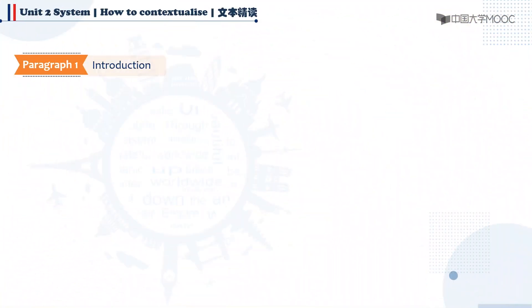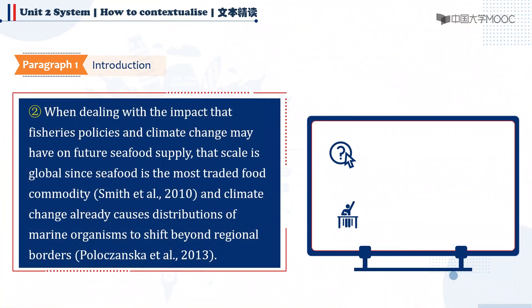Let's see if we could figure it out in the second sentence: 'When dealing with the impact that fisheries policies and climate change may have on future seafood supply, that scale is global since seafood is the most traded food commodity and climate change already causes distributions of marine organisms to shift beyond regional borders.' Compared with the first sentence, this one specifies the scale of modeling and forms the first supporting sentence of sentence one.